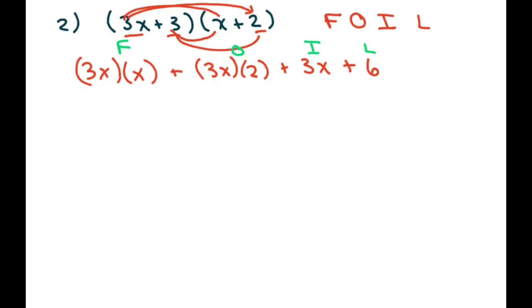And you're going to simplify this. This will be 3x squared, plus 6x, plus 3x, plus 6. And with the two binomials like this, we usually add the outer and the inner. So you get 3x squared, plus 9x, plus 6. This is standard form.